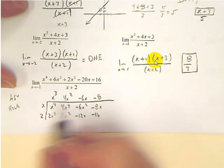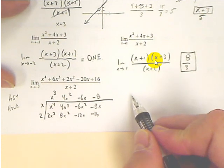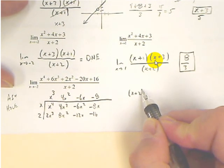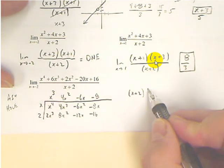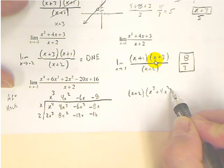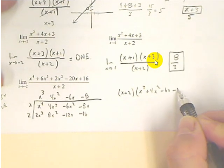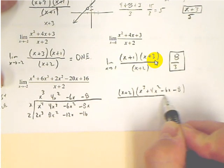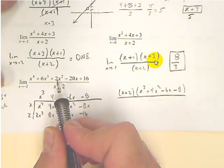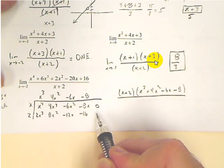And there it is, no remainder. Now, what you should get used to doing is recognizing what you just did. You just found that x plus 2 times x cubed plus 4x squared minus 6x minus 8 is the numerator. Those two guys multiplied together is that. That's what you just found because you got a remainder of 0.